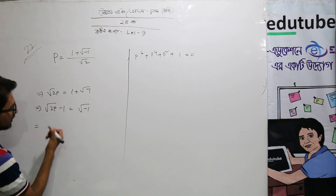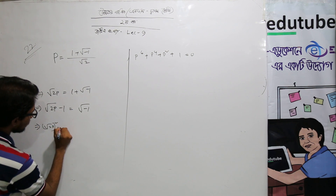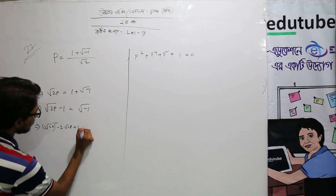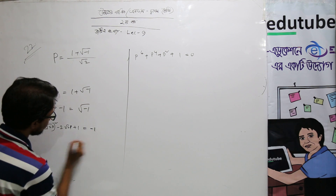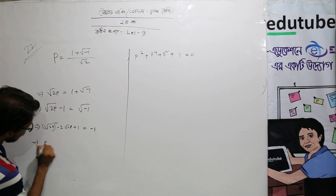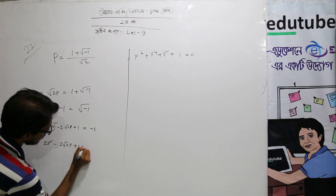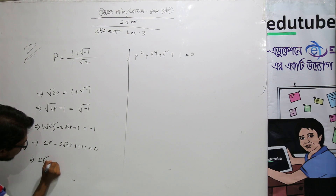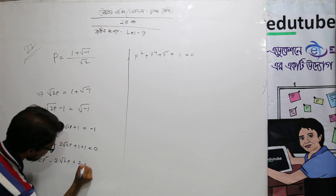We will do both sides square. So root over 2p squared minus 2 into root over 2p plus 1 is equal to minus 1. That means 2p squared minus 2 root 2p plus 2 equals to 0.